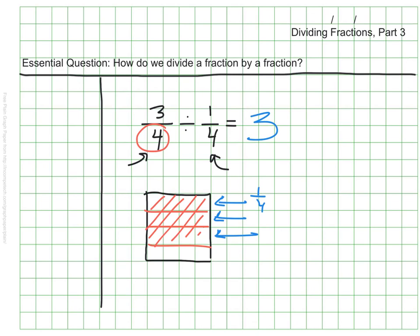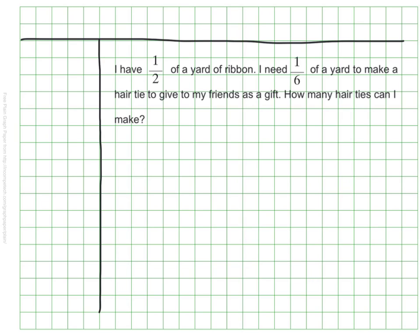What if we have one that's not as intuitive? Let's try that. Suppose I have 1 half of a yard of ribbon, and I need 1 sixth of a yard to make a hair tie to give to my friends as a gift. My question would be, how many hair ties can I make with the amount of ribbon that I have? 1 half.